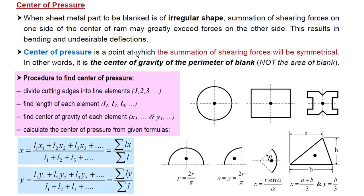Centre of Pressure is a point at which the summation of shearing forces will be symmetrical, so that uneven forces will not result in bending and undesirable deflections. In other words, Centre of Pressure is the centre of gravity of the perimeter of the blank and not the centre of gravity of the area of the blank. Keep that in mind.